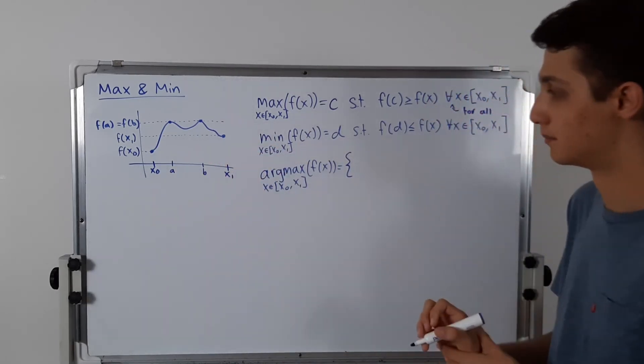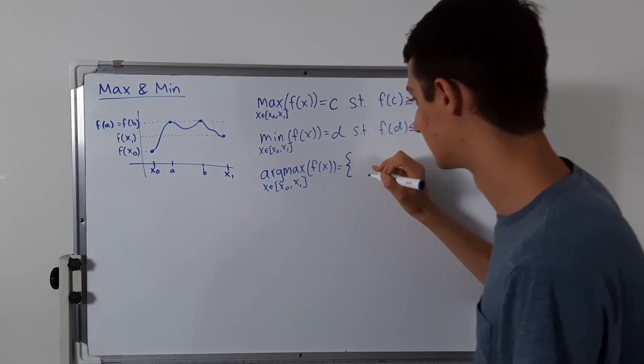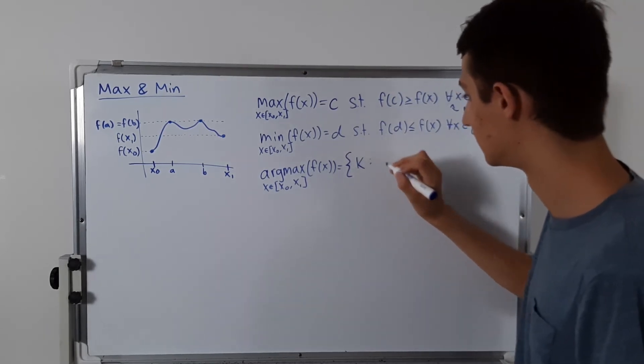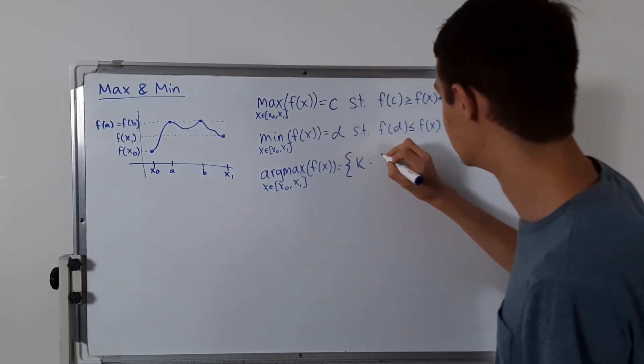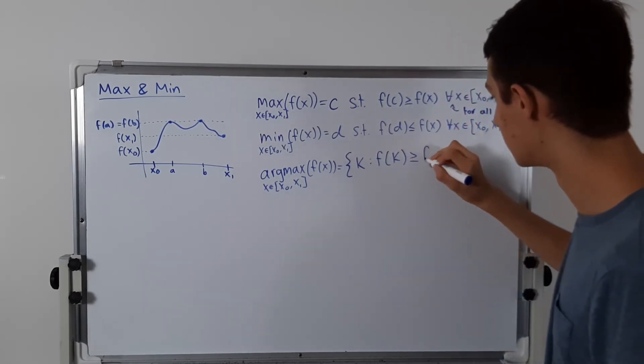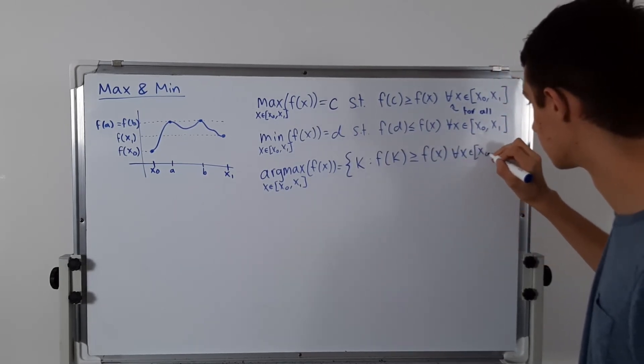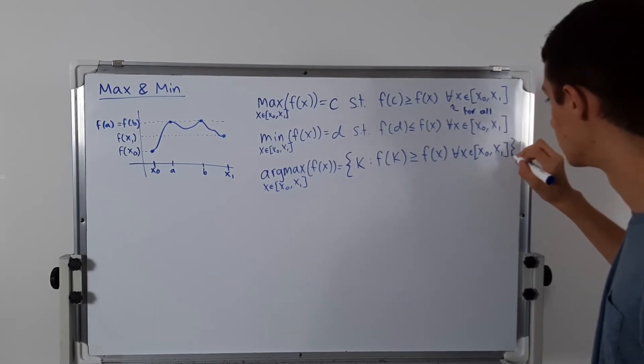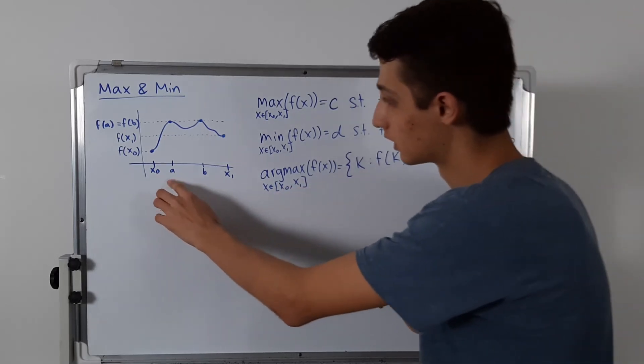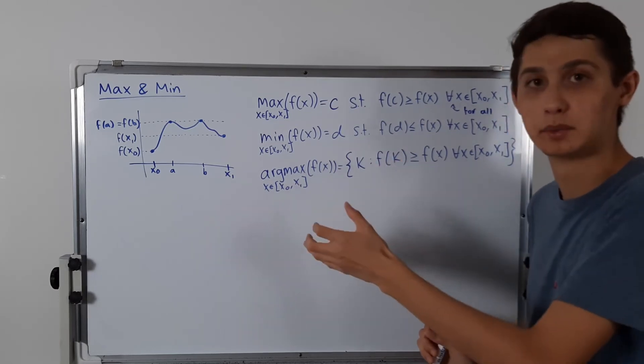But in general, I'm going to say that it is all k, such that, so I'm going to use that notation for such that, f of k is greater than or equal to f of x, and again, for all x on that interval, x0 to x1. And so that's the argmax. It's all of these k values, which in this case are a and b, that get us to reach that maximum, and the argmin is very similarly defined.